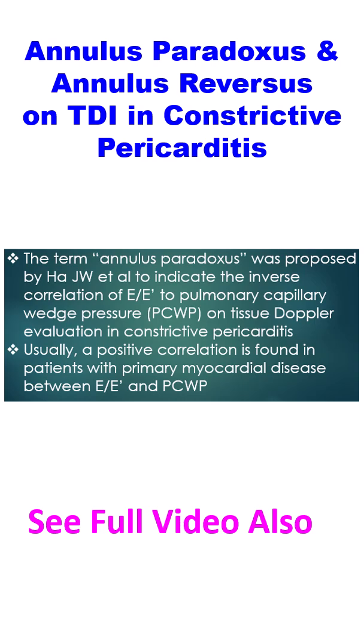Another study of 130 surgically confirmed patients with Constrictive Pericarditis from Mayo Clinic reported similar findings. They noted significantly lower E by E' ratios at the medial mitral annulus in patients with Constrictive Pericarditis compared with patients without it. The authors acknowledged the preserved or accentuated E' velocity in Constrictive Pericarditis leading to the lower than expected E by E' in the setting of increased left ventricular filling pressure as annulus paradoxus.